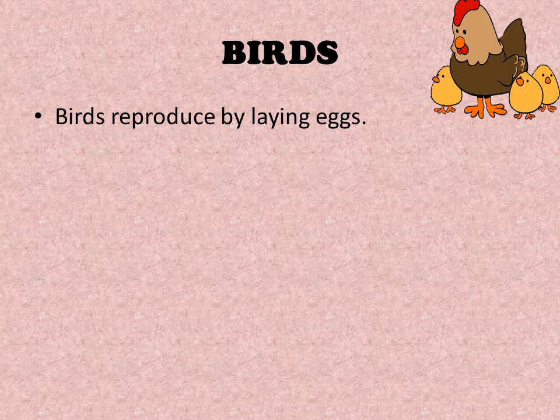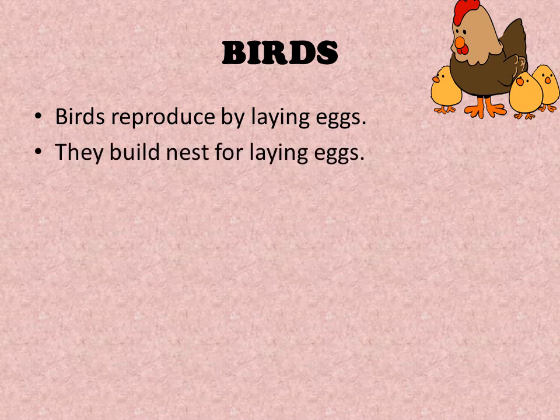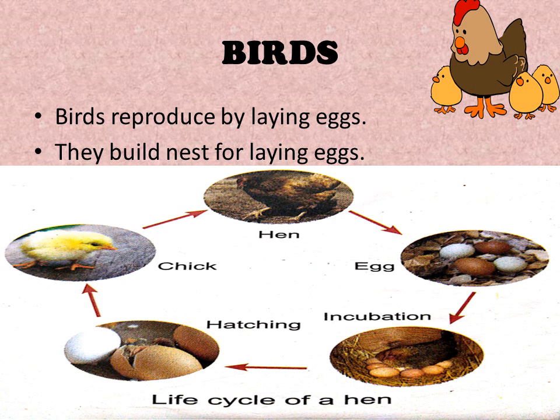Birds. Birds reproduce by laying eggs. They build nests for their eggs. This is the life cycle of a hen. The hen lays eggs and then sits on them to keep them warm — this process is called incubation. After a period of 21 days, the baby hatches out of the egg. This process is called hatching. After the baby comes out of the egg, it looks like a chick, and then the chick develops into an adult hen.